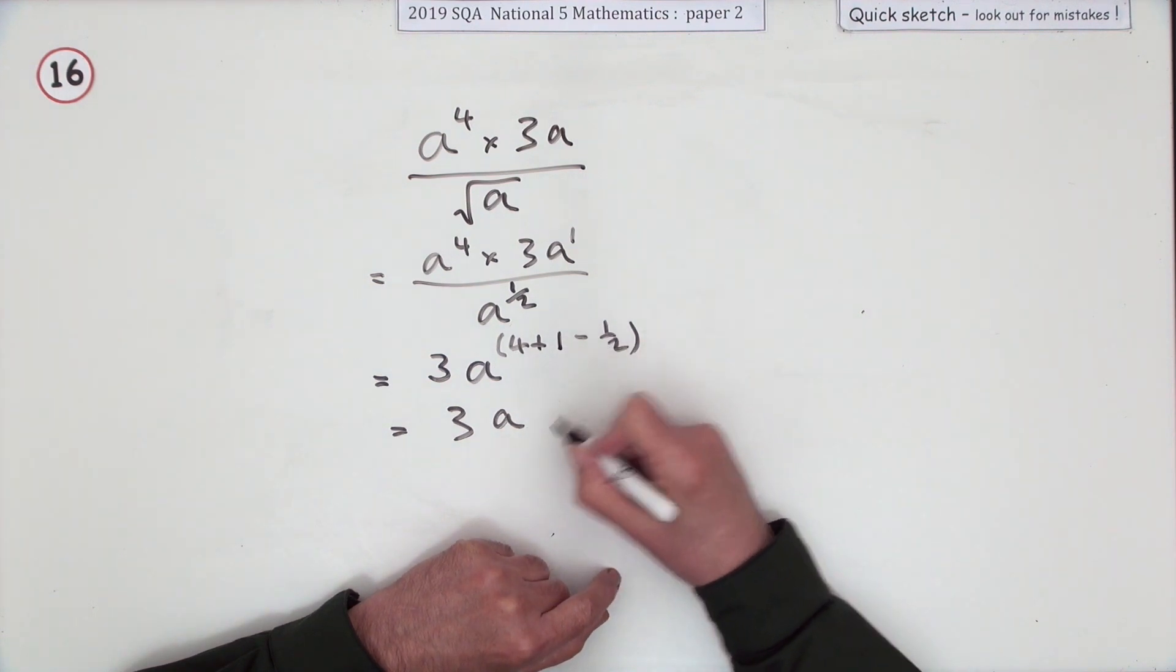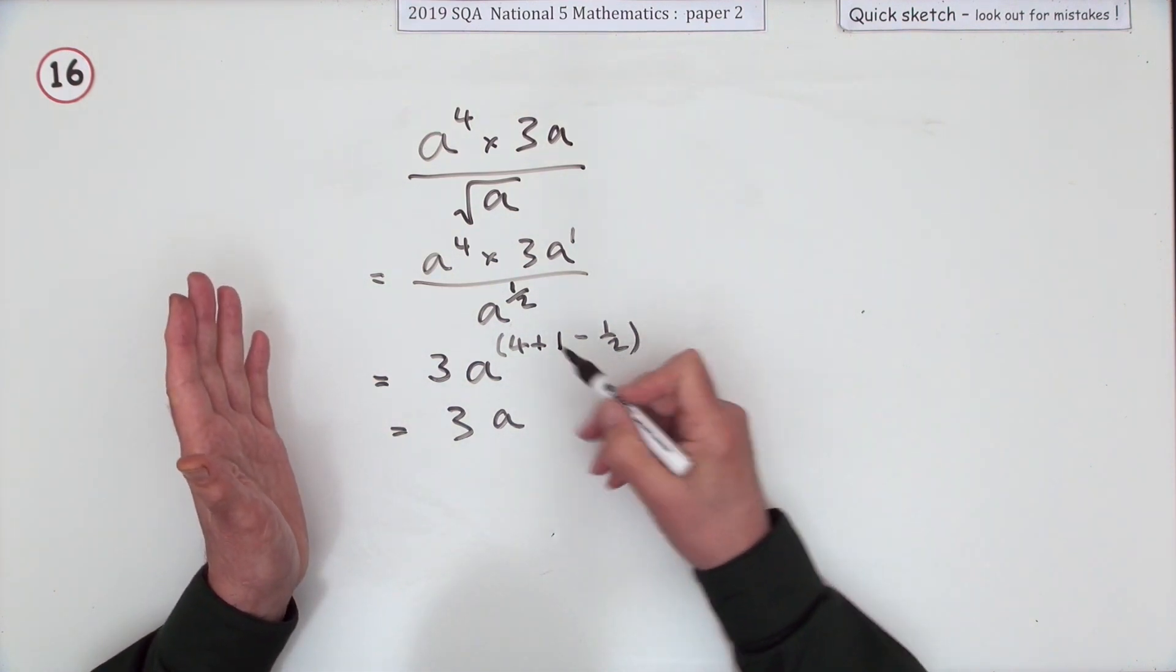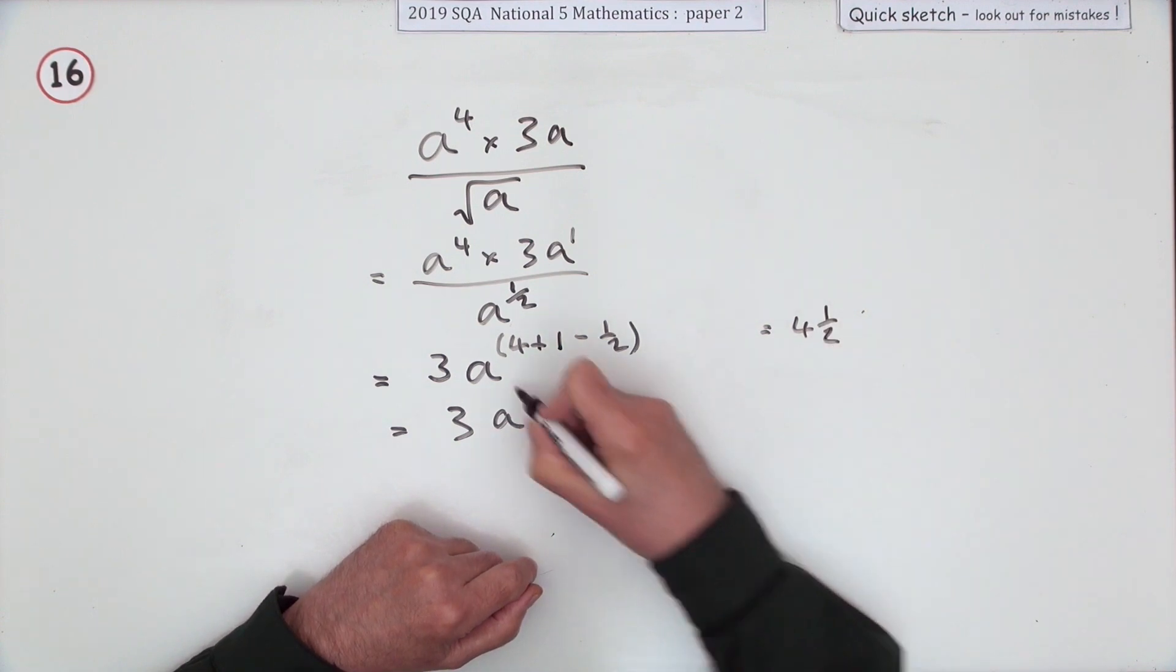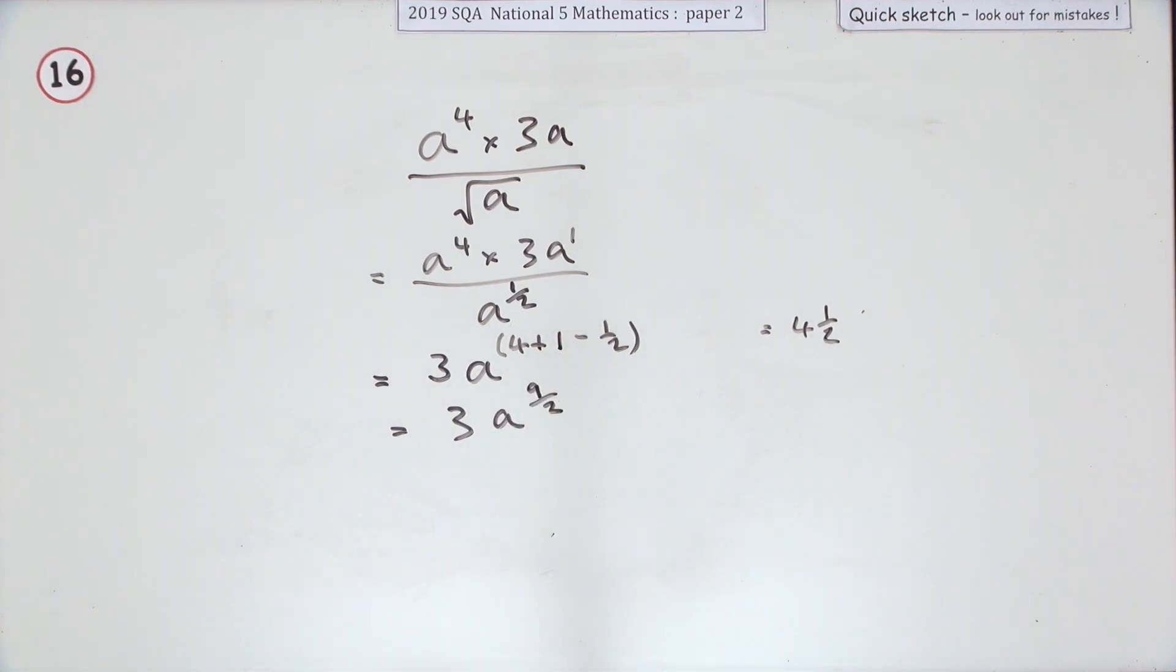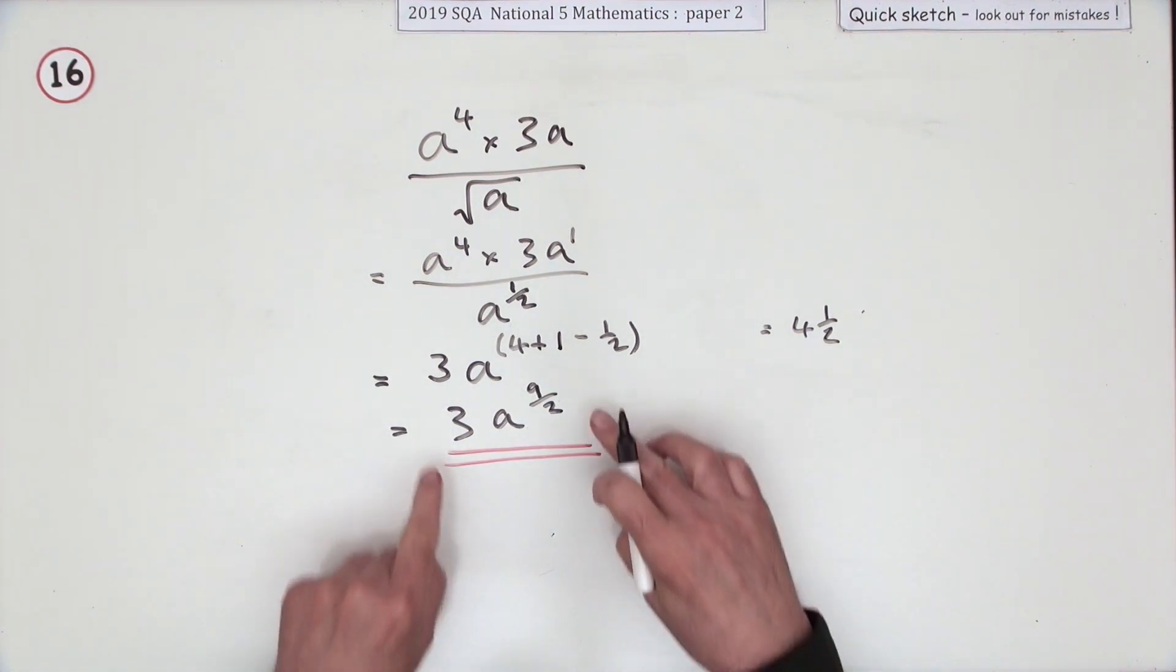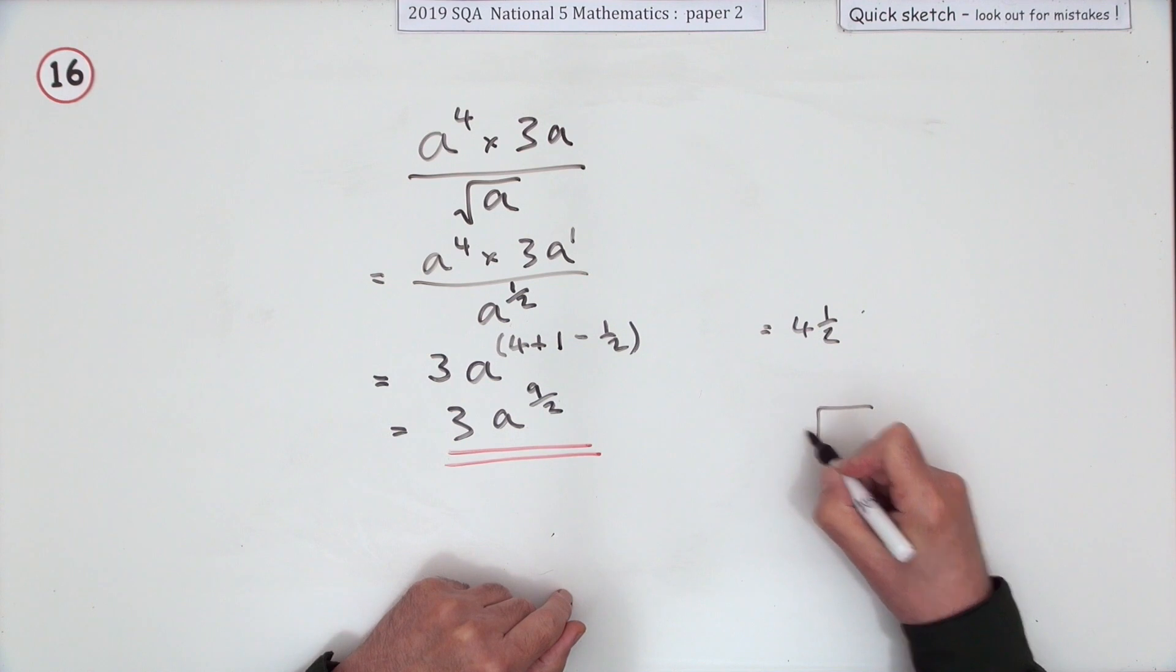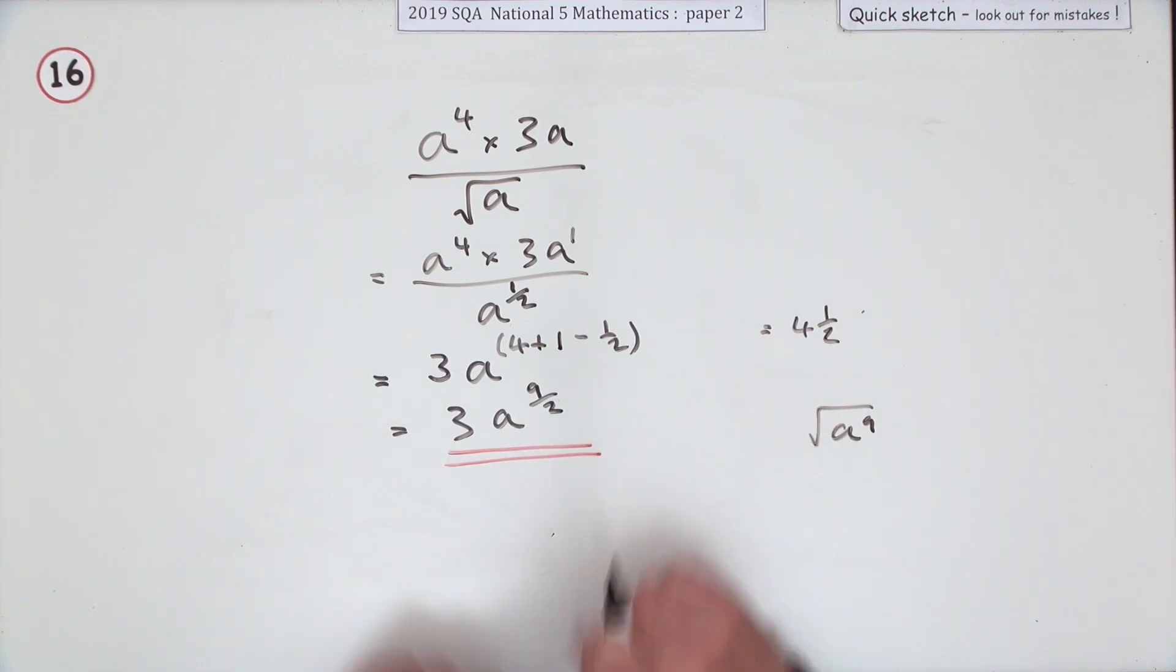But you never write 4 and a half for a power, for an index, because you want to see the two parts - that power and the root. So even though that comes to 4 and a half, I'll write it as 9 upon 2. I'm sure that's sufficient for the answer. Power 9, root 2. You could rewrite it with a square root as the square root of a to the 9, but I'm pretty sure that's all that they're looking for.